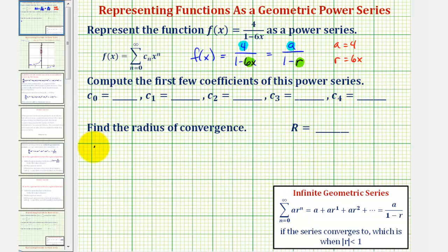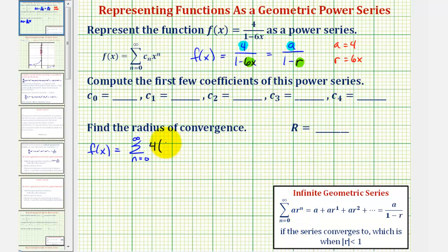So with a = 4 and r = 6x, we can write the function as a power series: f(x) equals the summation from n equals zero to infinity of 4 times (6x) raised to the power of n. Now we'll find the first five terms to determine c sub zero through c sub four.